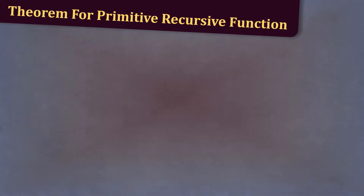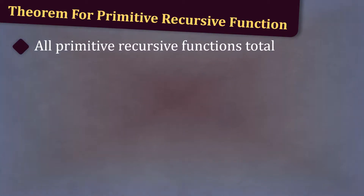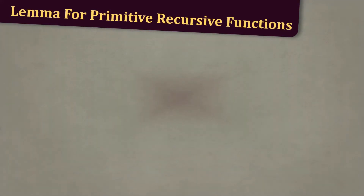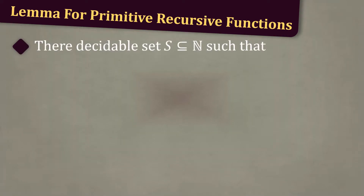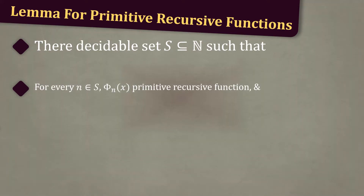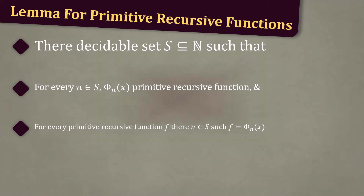Now let's state a theorem for primitive recursive functions: all primitive recursive functions are total functions. Next, let's discuss a quick lemma for primitive recursive functions. There is a decidable set S, a subset of the natural numbers, such that for every n in S, phi sub n of x is a primitive recursive function, and for every primitive recursive function f, there is some n in S such that f is equal to phi sub n of x.